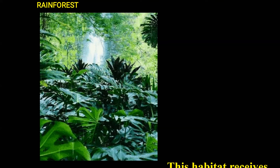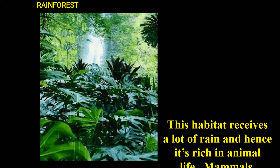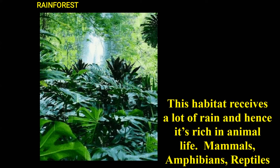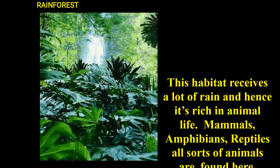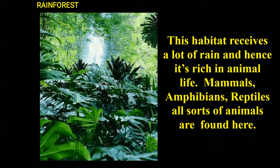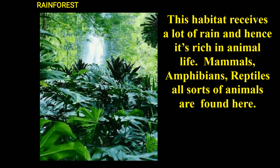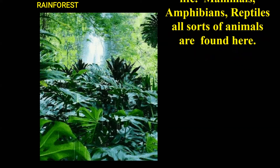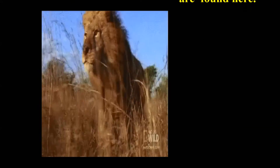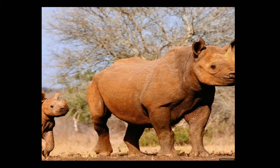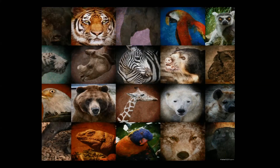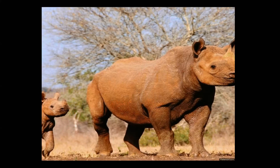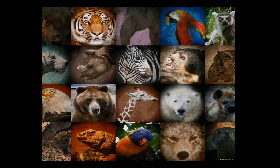Now let us discuss about rainforest habitat. This habitat receives a lot of rain and is hence rich in animal life. Mammals, amphibians, reptiles and all sorts of animals are found here. The climate is hot and humid, and animals have to adapt to survive in these areas.